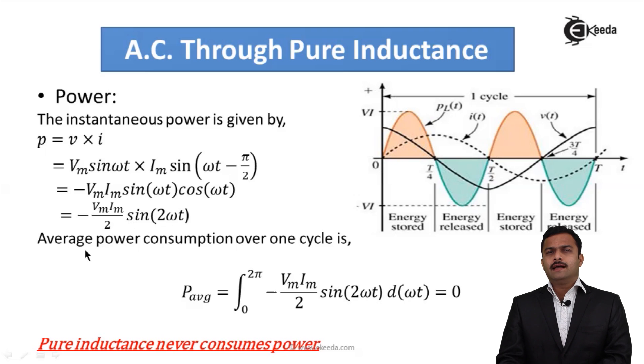Average power of this circuit will be Pavg equal to integral 0 to 2π of Vm Im by 2 sin 2ωt d(ωt). What I have done, simply I have taken average of this waveform over a complete cycle. Whatever positive values are present for AC waveform, same negative values are also present. So that sums up to 0.